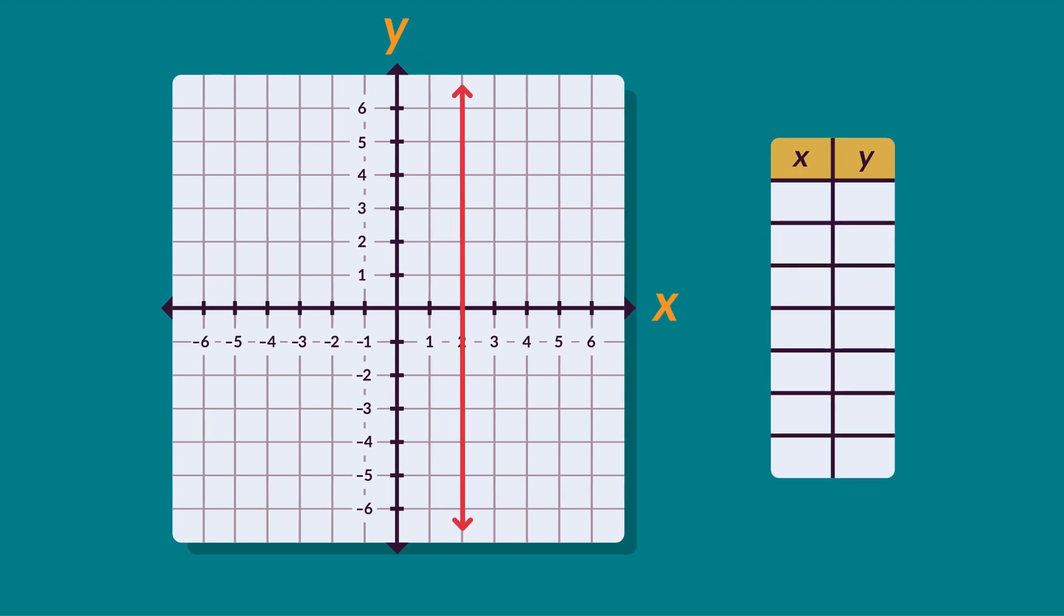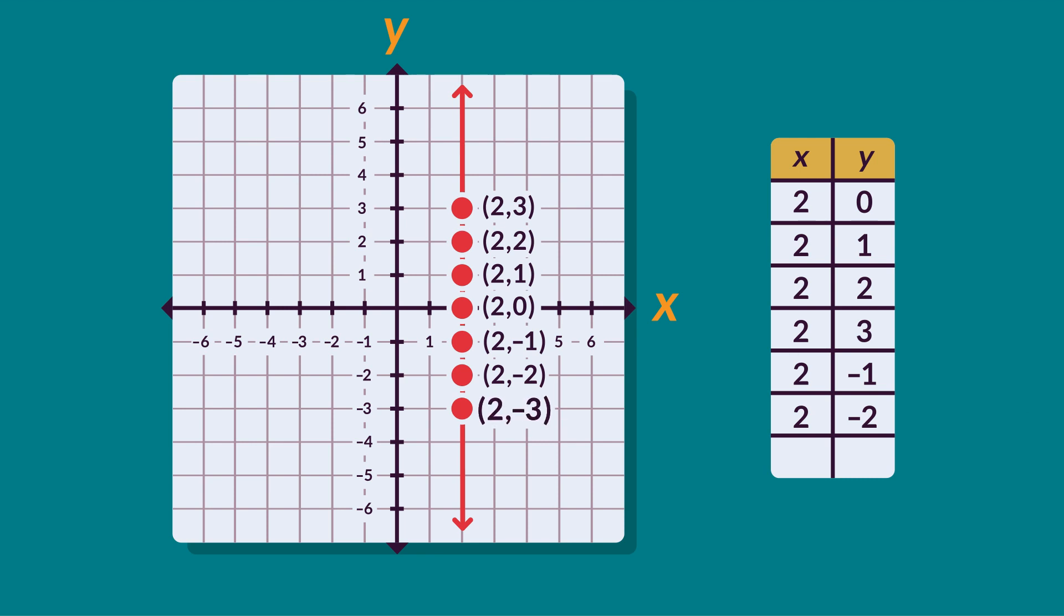For example, some points on this vertical line are shown. This means the difference between the x-coordinates of any pair of points on the line is equal to 0.